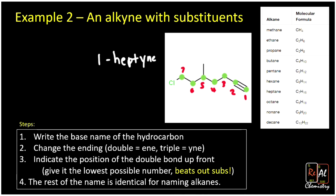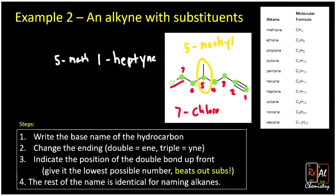Next, we need to go ahead and add the substituents — this looks just like naming alkanes. We see chlorine on carbon seven, so that would give us 7-chloro. And we see a methyl group on the fifth carbon — that's a carbon stick going up with one carbon at the end, which makes it a methyl group, so that's 5-methyl. Chloro goes at the front of the name because it is first in the alphabet, and methyl comes right after. Remember, every single time there's a number, we put a dash between it and the letter. So the full name is 7-chloro-5-methyl-1-heptyne.